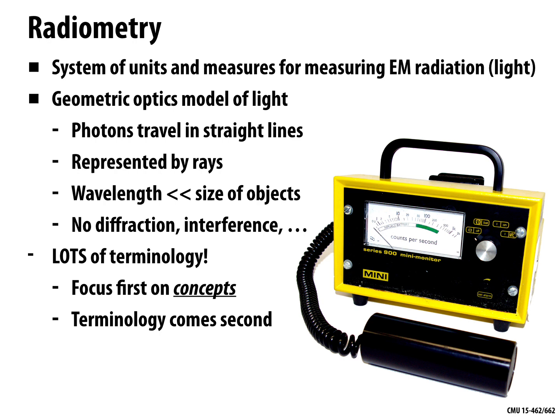It's really easy to get lost in this strange new vocabulary, but the concepts of how much light shows up when and where are actually pretty intuitive if you look at them the right way. So first, we're going to look at what these quantities mean, and then we're going to give names to them.